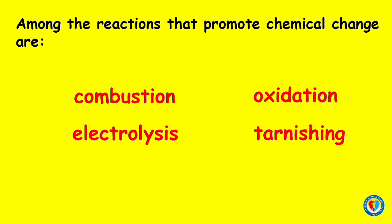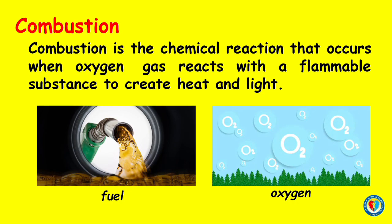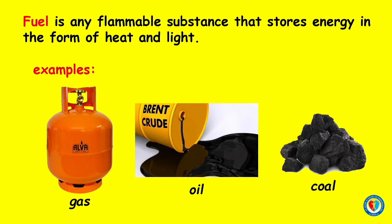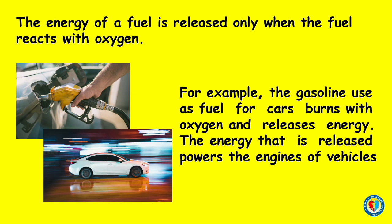Among the reactions that promote chemical change are combustion, electrolysis, oxidation, and tarnishing. Combustion is the chemical reaction that occurs when oxygen gas reacts with a flammable substance to create heat and light. The reaction most often happens between fuel and oxygen. Fuel is any flammable substance that stores energy in the form of heat or light — examples are gas, oil, and coal. The energy of fuel is released only when the fuel reacts with oxygen. For example, the gasoline used as fuel for cars burns with oxygen and releases energy that powers the engines of vehicles.